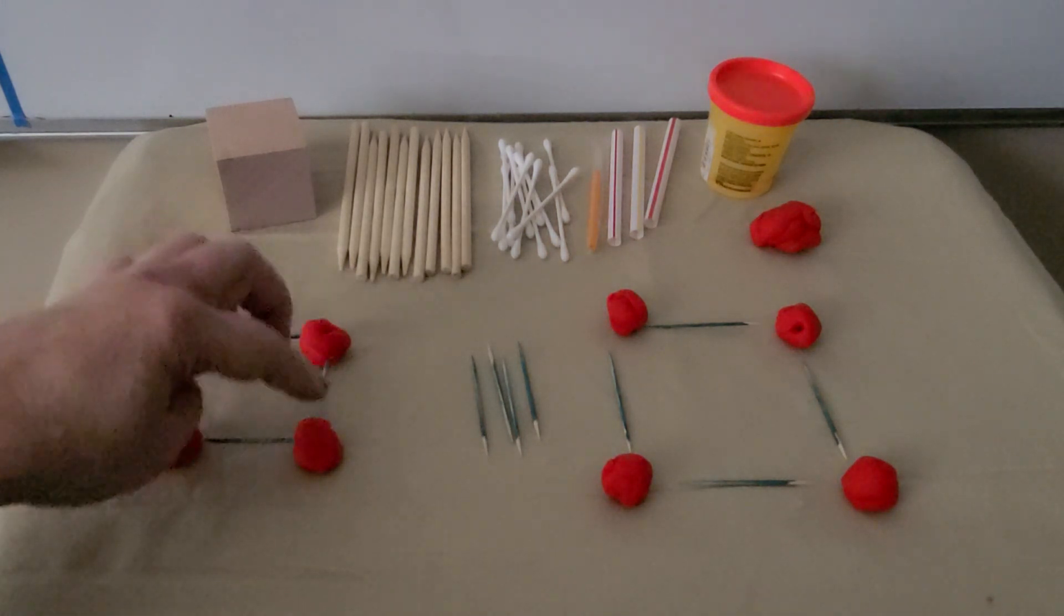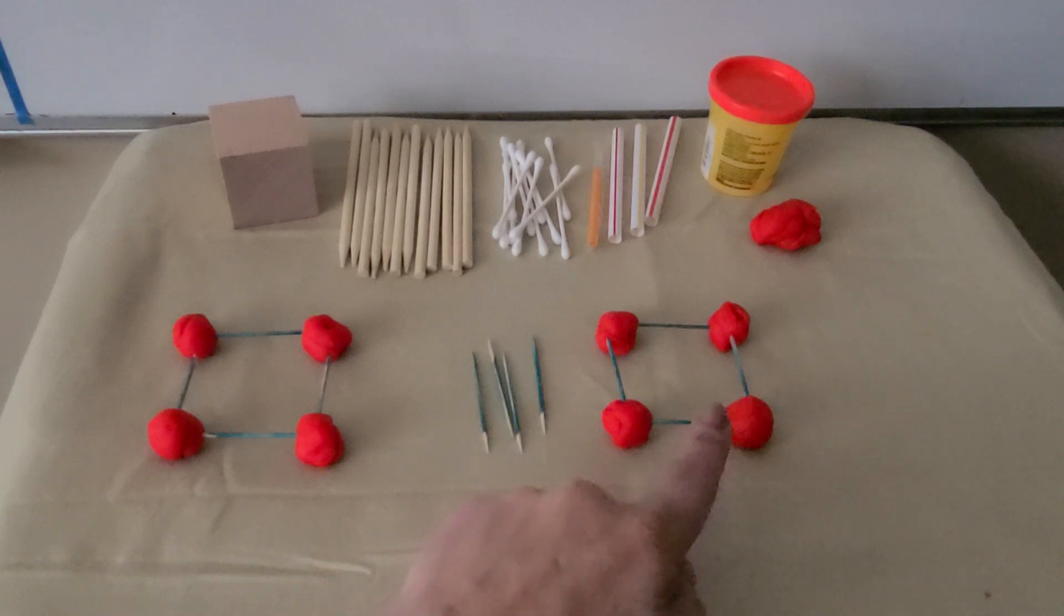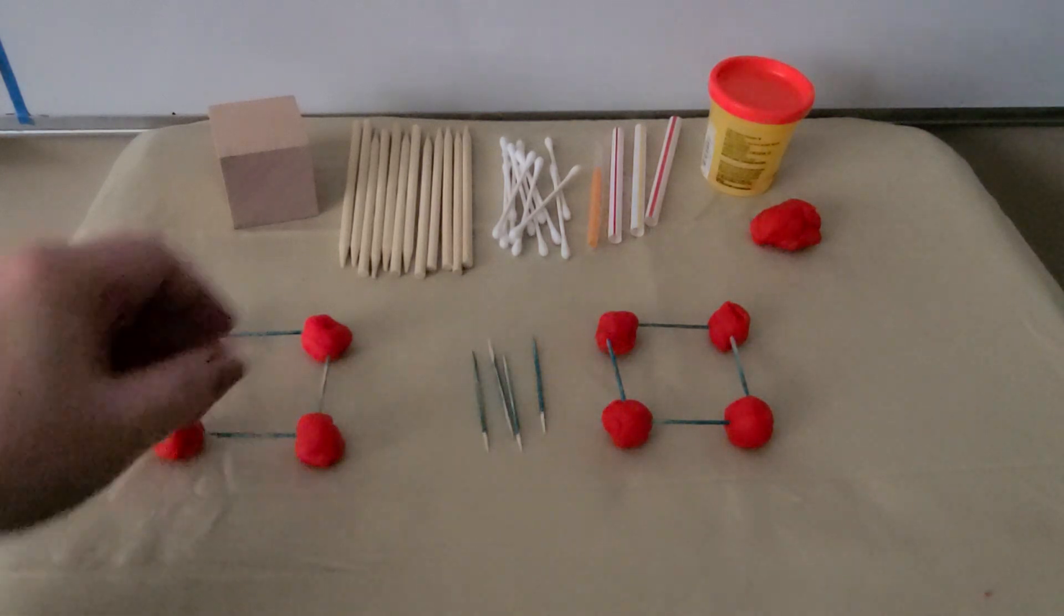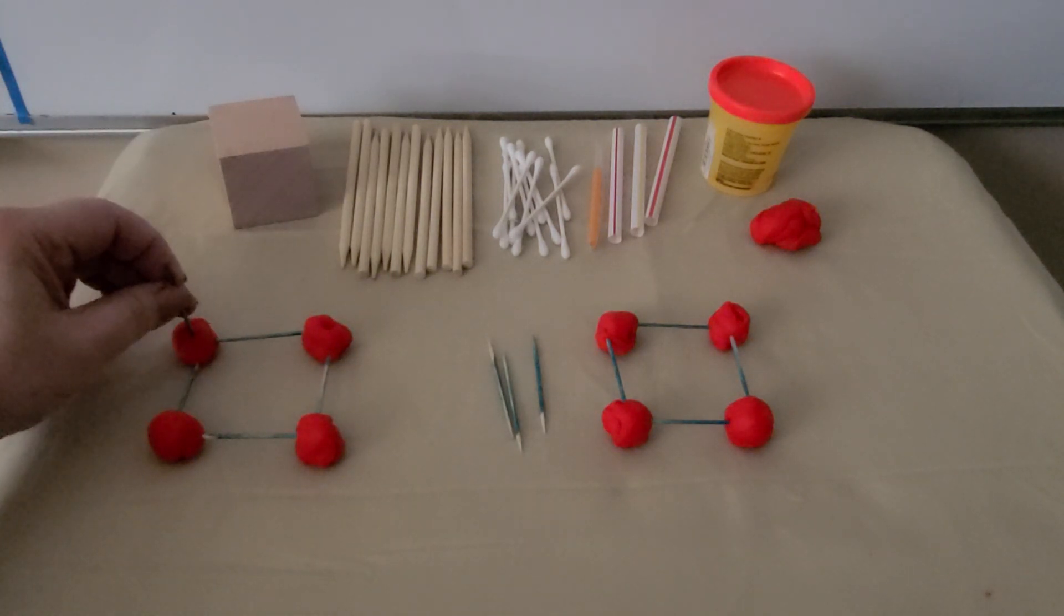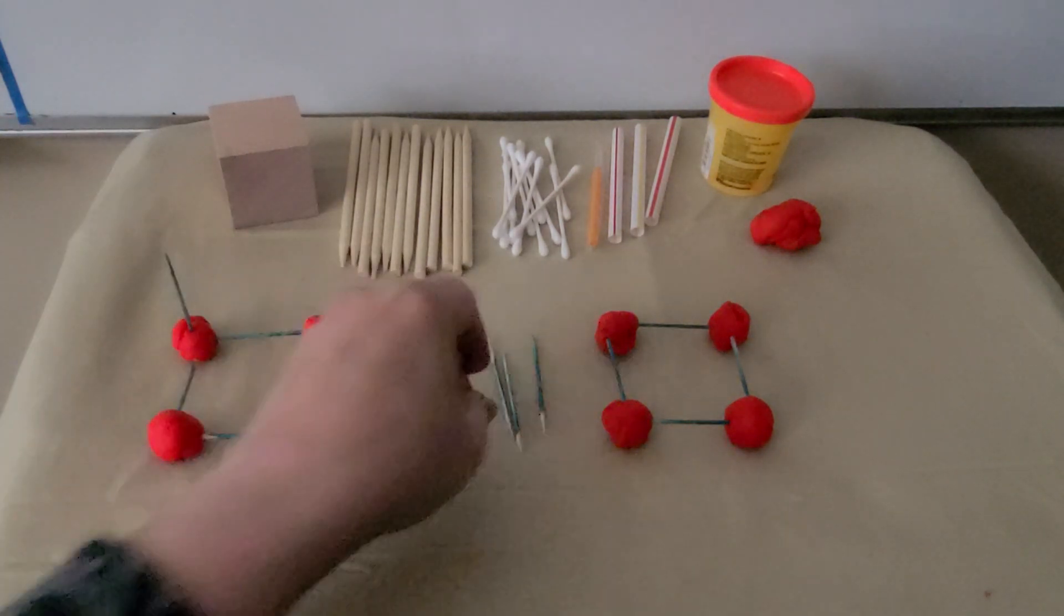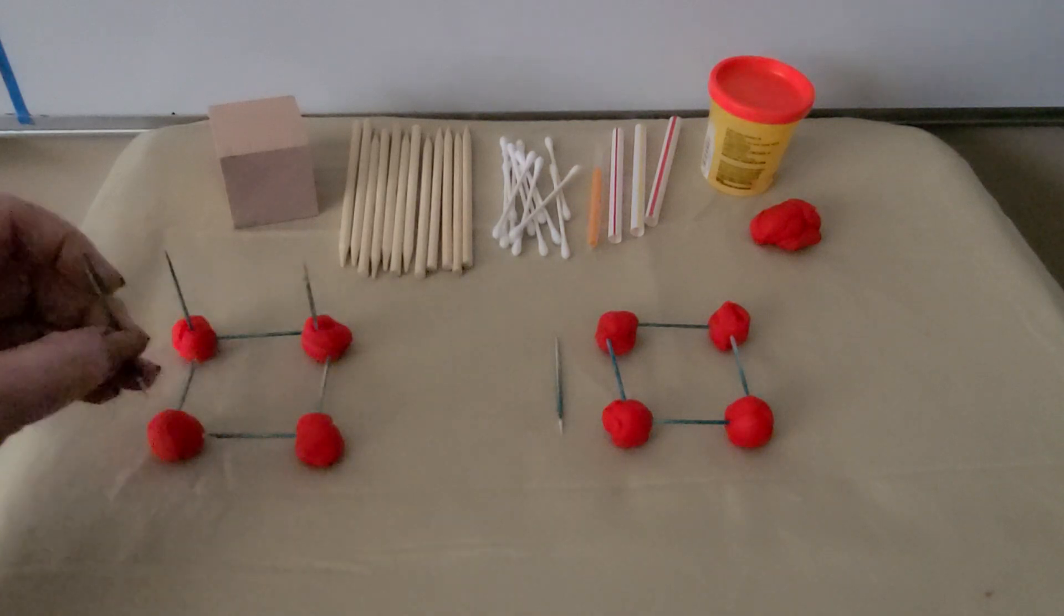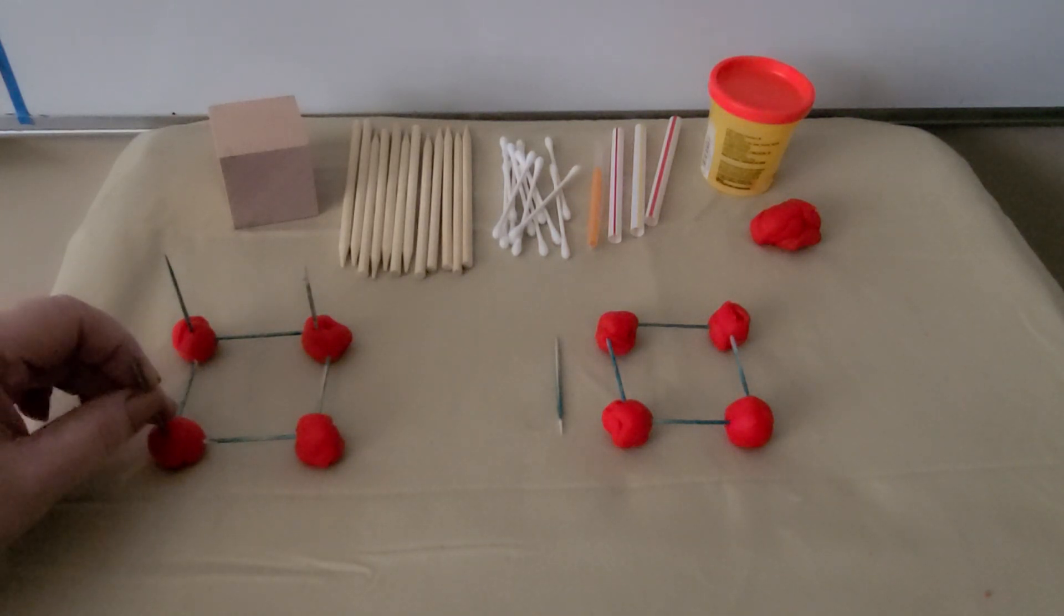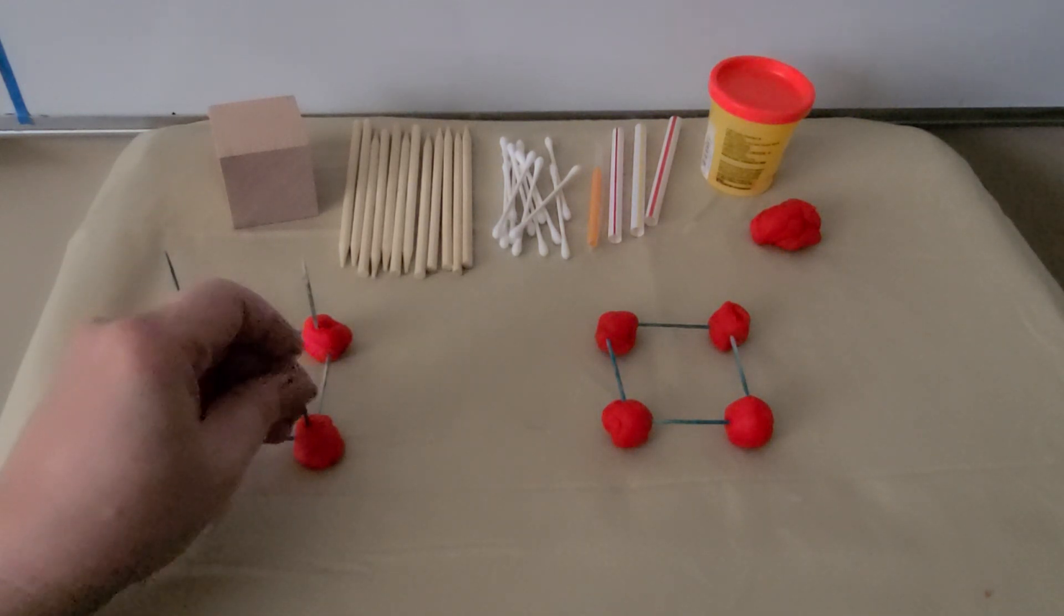We used four spheres of clay and four toothpicks. Each sphere is a vertex of our square. And we can make another square with four more spheres of clay and four more toothpicks. Now we have two squares. Now we take a toothpick and we stick it standing up in that sphere. We take another one and stick it standing up out of that sphere. Another one sticking up out of this clay sphere. And another one sticking up out of this clay sphere.